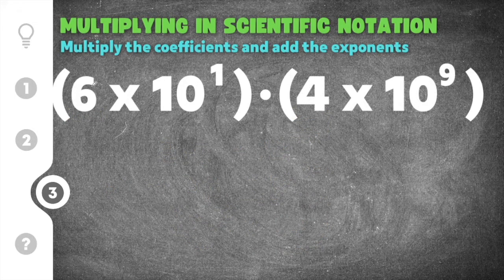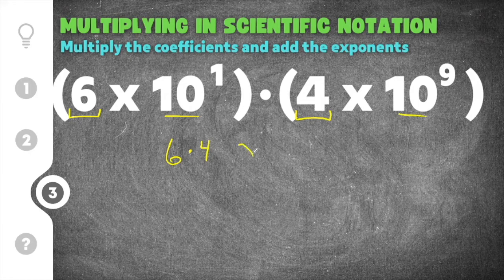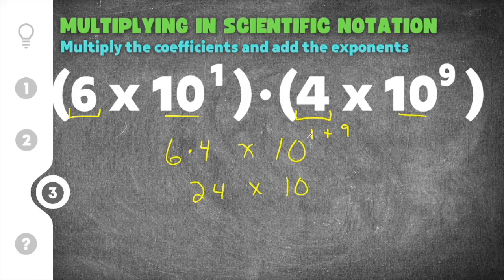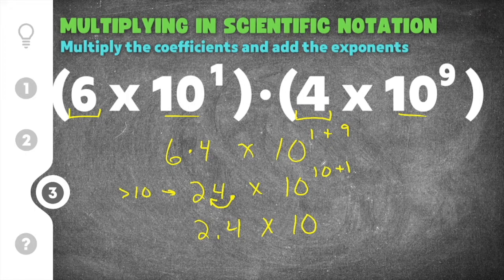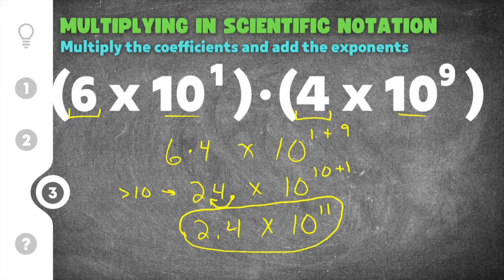The final problem is 6 times 10 to the 1st times 4 times 10 to the 9th. We multiply the coefficients: 6 times 4 is 24. We keep the base of 10 and add the exponents: 1 plus 9 is 10. So we have 24 times 10 to the 10th power. Since 24 is greater than 10, we move the decimal left one place to get 2.4, and add 1 to the exponent: 10 plus 1 is 11. Our solution is 2.4 times 10 to the 11th power.